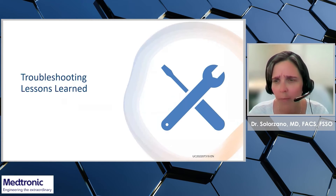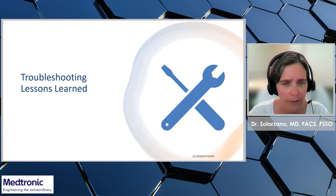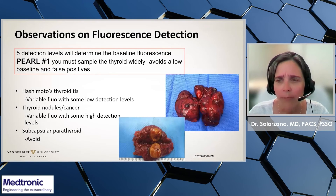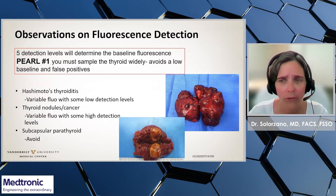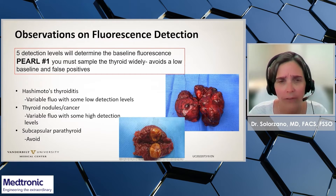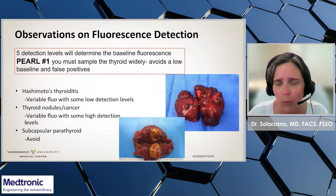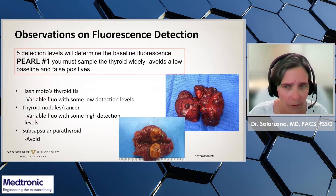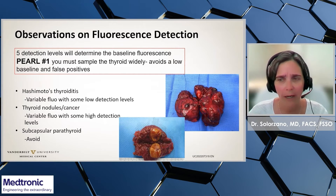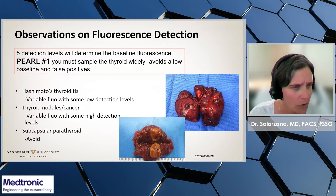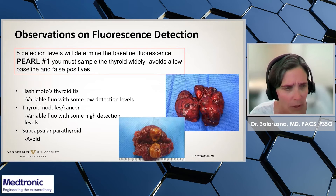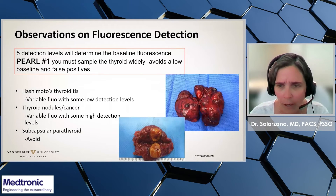Next I will talk about troubleshooting and lessons learned. Here are observations on detection levels. As you recall, five detection levels determine the baseline. If your sampling of the background fluorescence is too high or too low, you will miss parathyroid tissue — false negative — or get false positives. Conditions that may affect background fluorescence include Hashimoto's, thyroid nodules, or a subcapsule of parathyroid.